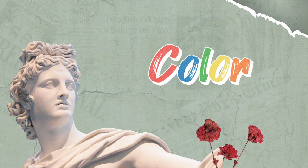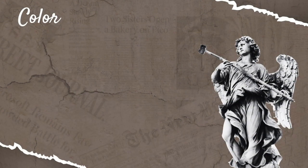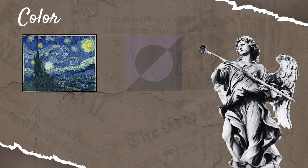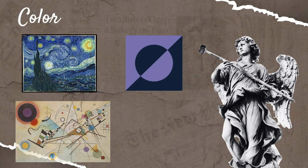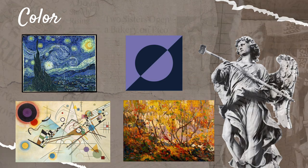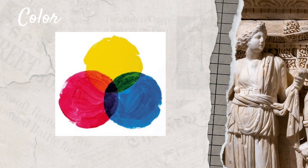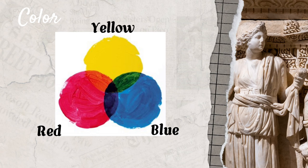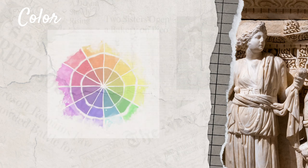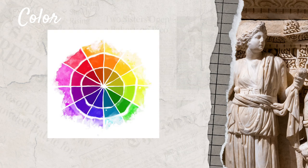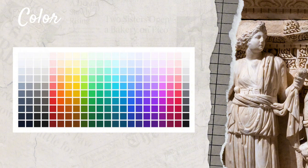Color is an important element that can be used to create harmonies, contrast, unity, and variety in images. There are three primary colors — red, blue, and yellow — and other varieties of colors that if mixed together can form other neutral colors.